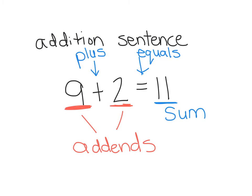which are right here. 9 and 2 are the addends, and the sum is 11.